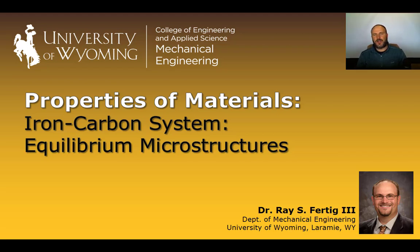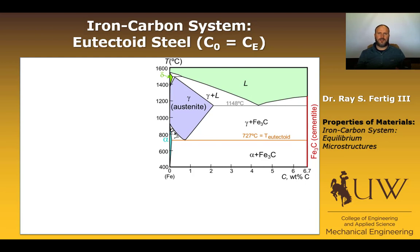For this lecture, we're going to talk about the iron-carbon system and look at the equilibrium microstructures that emerge. We're going to look first at the eutectoid microstructure, then at the hypo-eutectoid microstructure, and finally at the hyper-eutectoid microstructure. Throughout, I'm not going to go through phase compositions and weight fractions — we've already talked about that. We're just going to talk about the microstructures that emerge.